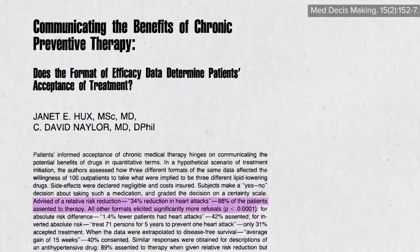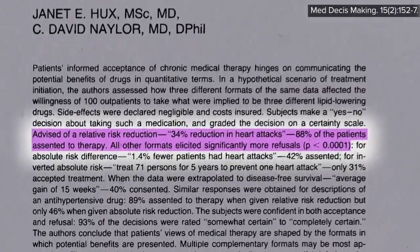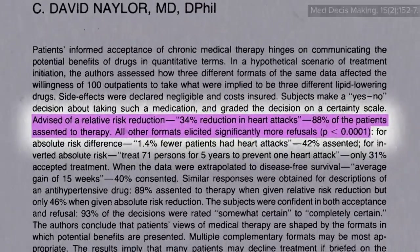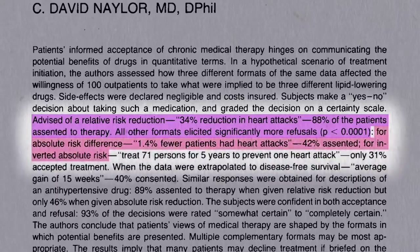If doctors inform patients only about the relative risk reduction — for example, telling patients a pill will cut the risk of heart attacks by 34% — 9 out of 10 agree to take it. Give them the same information framed as absolute risk reduction, though — 1.4% fewer patients had heart attacks — and those agreeing to take the drug drops to only 4 out of 10. Use the numbers needed to treat, and only 3 in 10 patients would agree to take it.